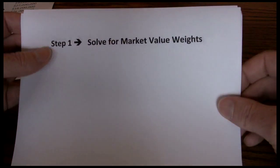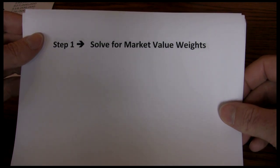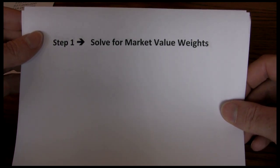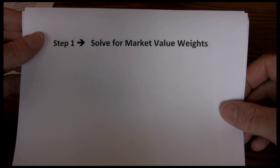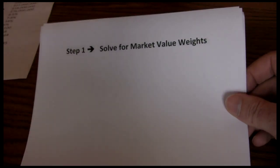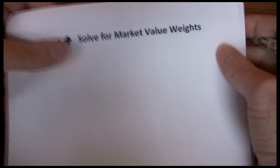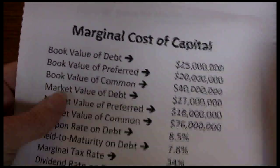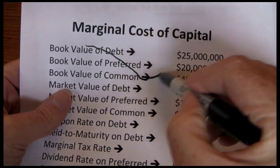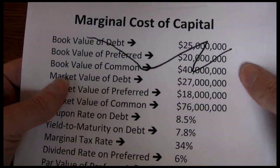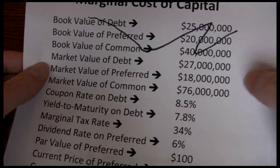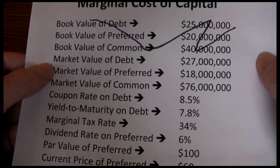The first thing we have to do is solve for the market value weights. Weights refer to proportions of financing coming from each source — what percentage is coming from debt or bonds, what percentage from preferred stock, and what percentage from common stock. When calculating weights, we want to focus on market values, not book values. So when we look at this data set, the book values become meaningless and we can cross those out. The only reason book values are provided is to make sure you know which one to use, and we want to use market values.